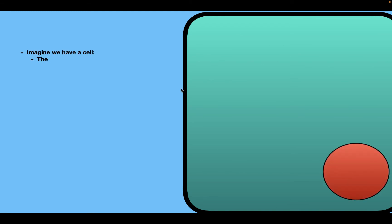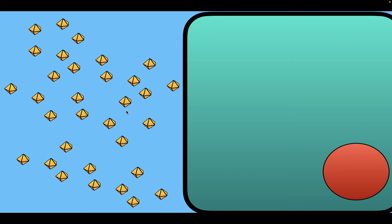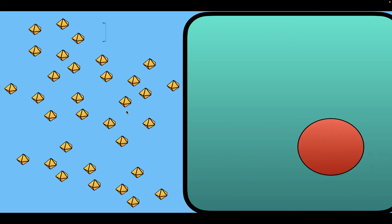Let's start off with an experiment. We have a cell that is immersed in a solution, and the osmolality of the solution is equal to the osmolality of the cytosol in the cell. So both the cell and the solution have the same osmolality. We start by adding solute into the solution — in this case, urea. Adding urea increases the solution's osmolality, so the osmolality of the cytosol is now less than the osmolality of the solution.